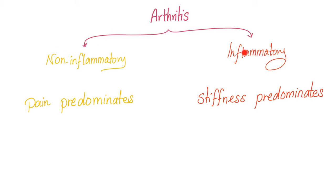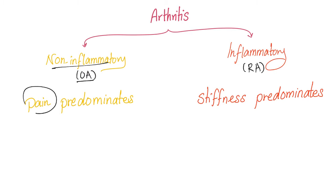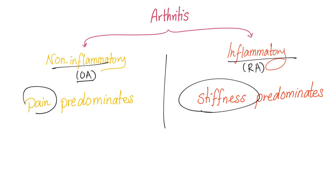Arthritis can be non-inflammatory, such as osteoarthritis, or inflammatory, such as rheumatoid arthritis. In osteoarthritis or any non-inflammatory arthritis, pain predominates. On the other hand, in inflammatory arthritis, stiffness predominates. This distinction is profound.